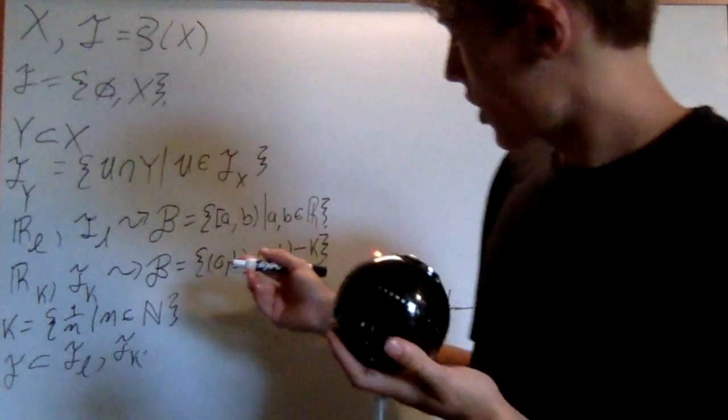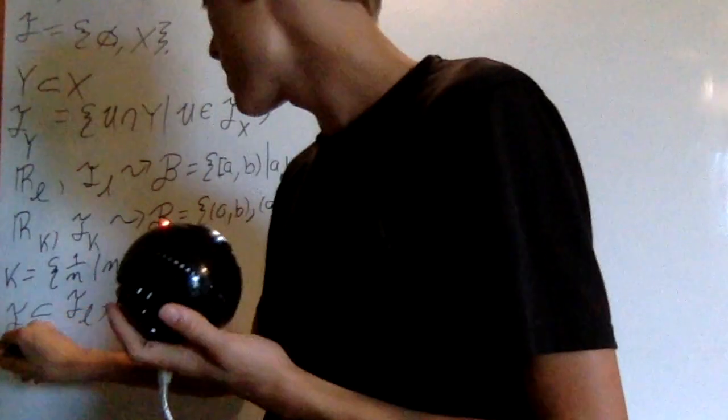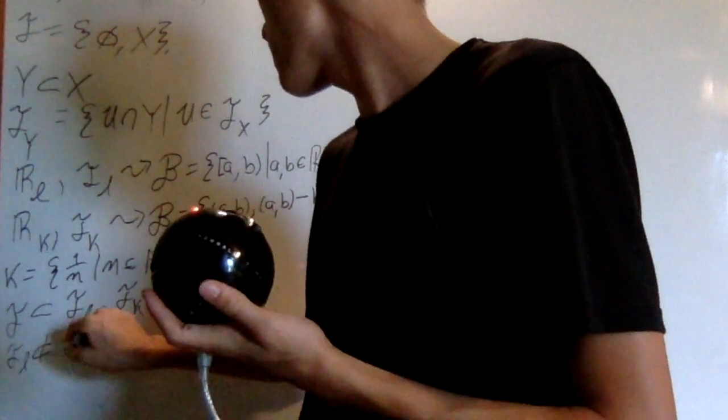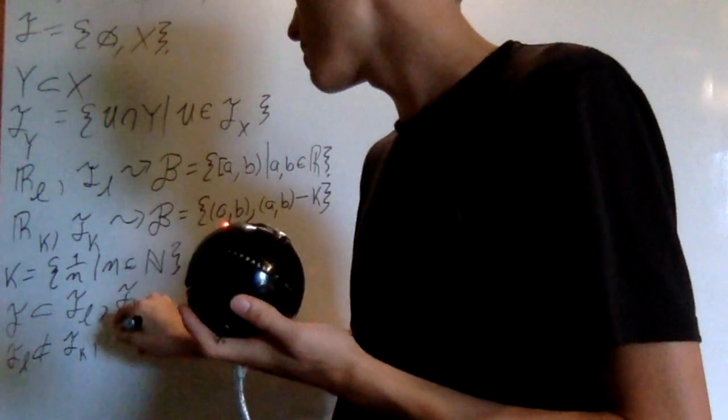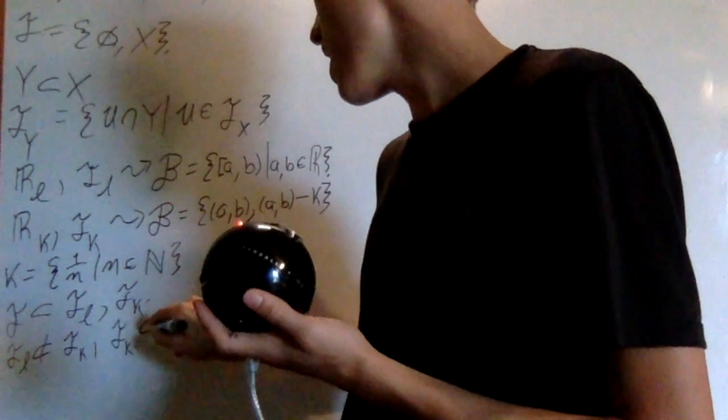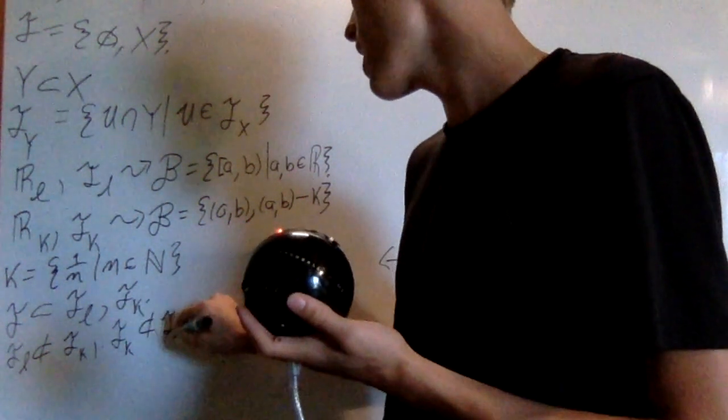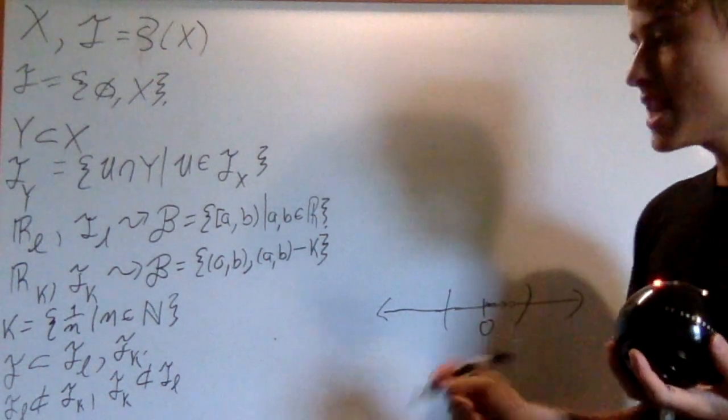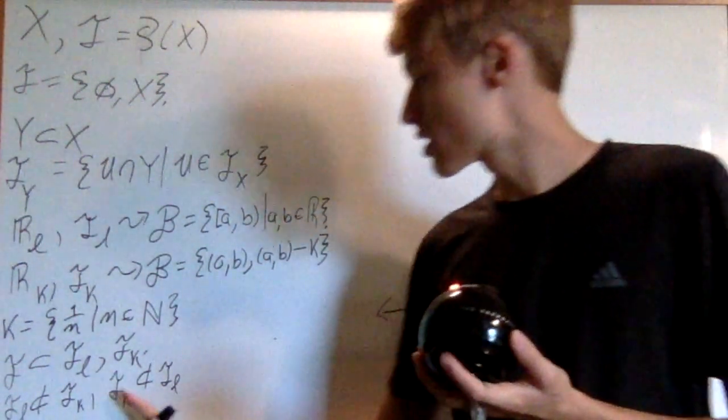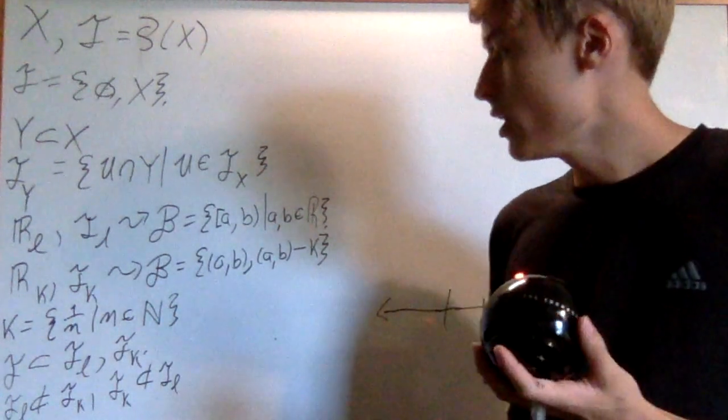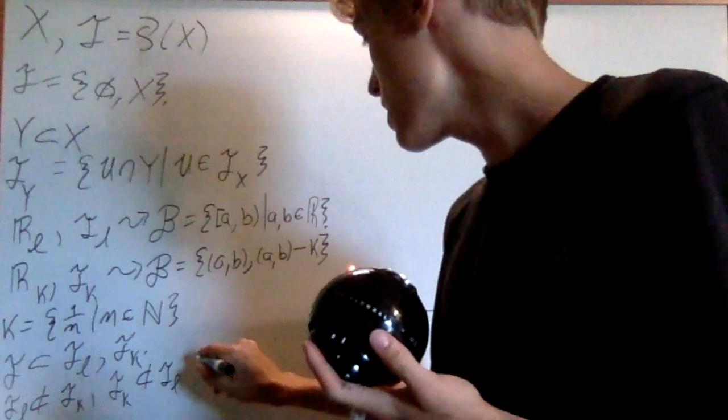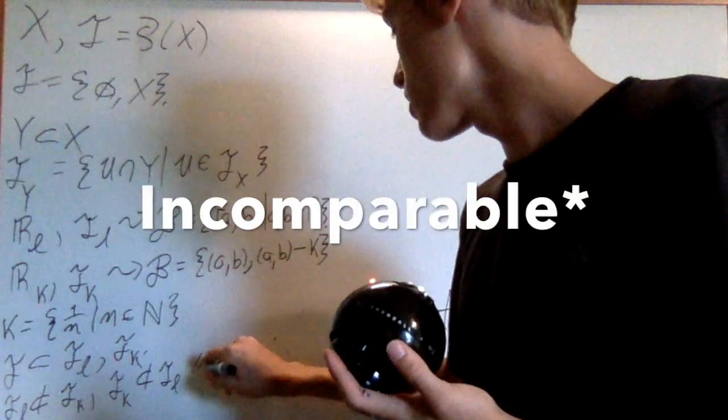Now, the thing is, is that the topology on L is not a subset of the topology on K and the topology on K is not a subset of the topology on L. So wouldn't it be nice if we had a name for two topologies on the same set that really just aren't subsets of each other?